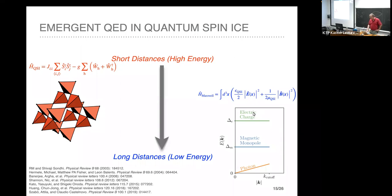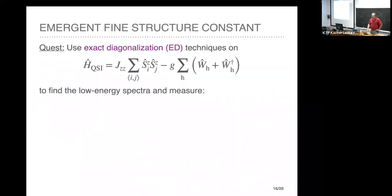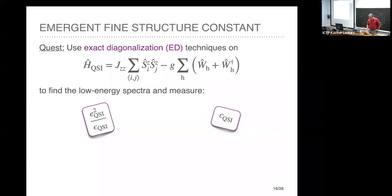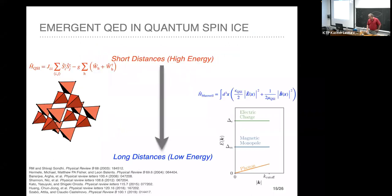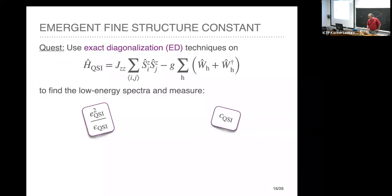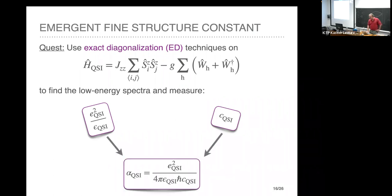What we're trying to do now is make a connection between this Hamiltonian and the pre-factors of that long-wavelength theory. We're going to use exact diagonalization techniques. Three-dimensional quantum spin models are not very friendly towards exact diagonalization, but the idea is we've got these different pre-factors to fix, and we actually only need to fix two quantities: essentially the strength of the Coulomb energy and the speed of light. Combining those two gives the fine structure constant of quantum spin ice — it's the one dimensionless quantity that characterizes the theory.